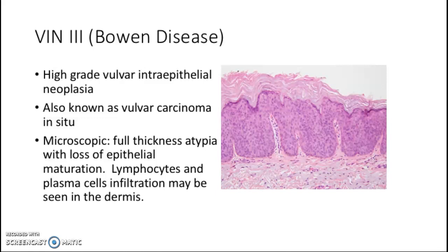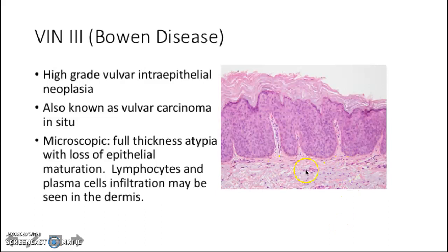VIN-3 is also known as Bowen disease, or vulvar carcinoma in situ. Microscopically, it will present as full-thickness atypia with loss of epithelial maturation and loss of basal cells. You will also see lymphocytes and plasma cells infiltration in the dermis.